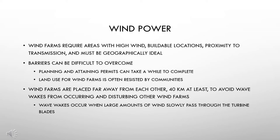Wind farms are placed far away from each other — at least 40 kilometers — to avoid wave wakes from occurring and disturbing other wind farms. Wave wakes occur when large amounts of wind slowly pass through the turbine blades, which can disrupt the amount of energy that is produced.